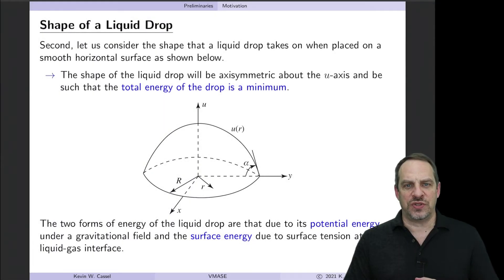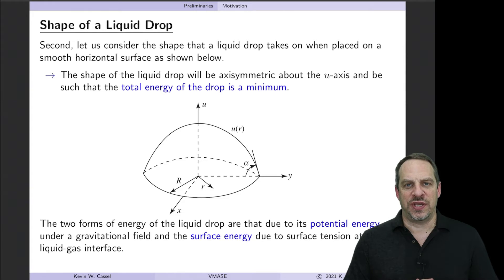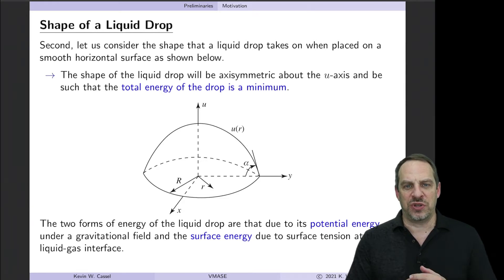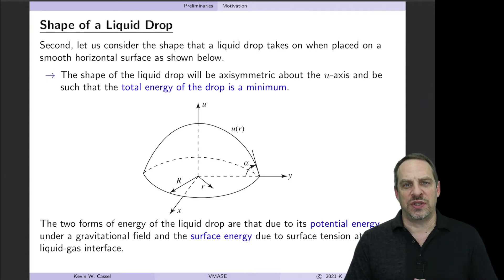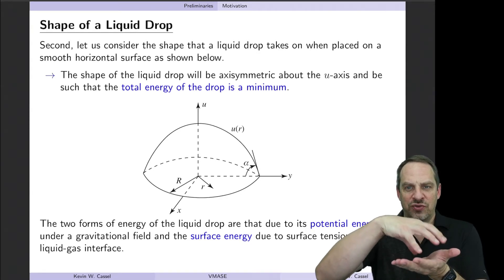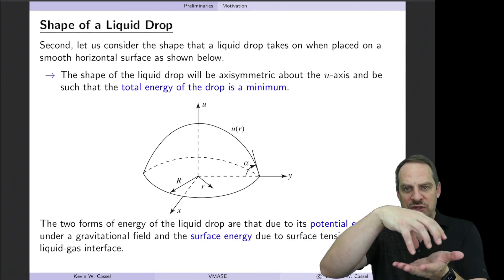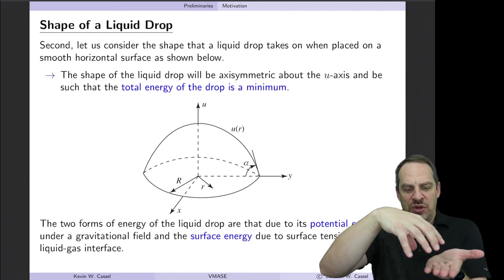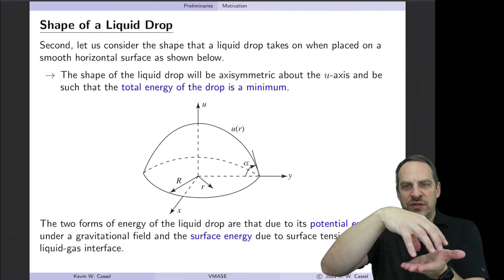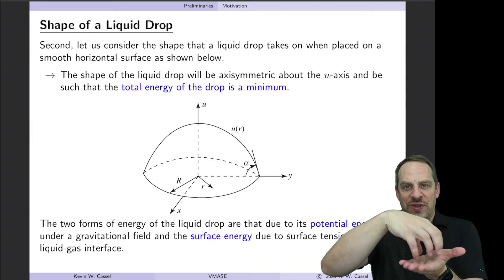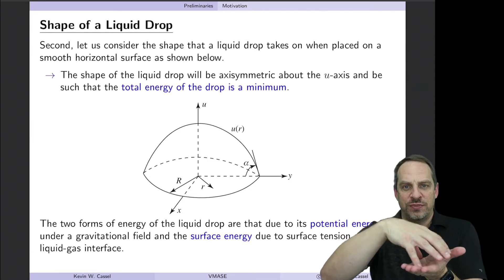In this video, we're going to look at a second physical example to help motivate the need for the calculus of variations. It'll be very similar to the optics example we looked at in the last video, but in this case, we're going to look at the shape of a liquid drop. We have a drop of liquid, say water, and you put it on a flat, smooth surface. The question is: what is the shape of that liquid drop?